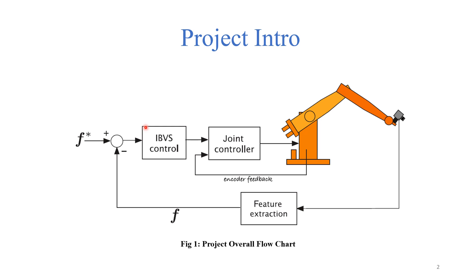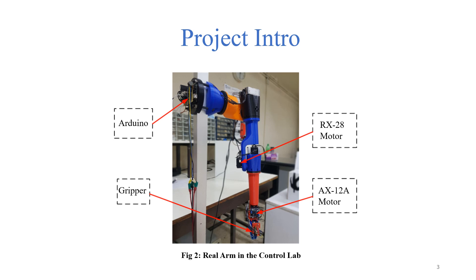We compute the error between these features and feed them into an IBVS control block — an image-based visual servoing controller — which gives us commands on how the arm should move. The execution of these reference commands is delegated to the joint controller subsystem, which issues the appropriate actuating signals to the arm's motors. What we're really interested in is the joint controller subsystem, which we'll discuss first, and then the IBVS control loop, which we'll discuss later.